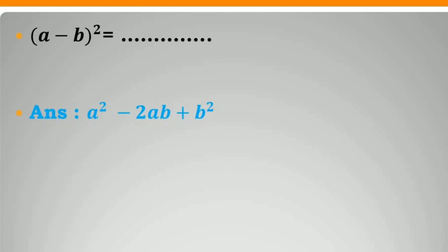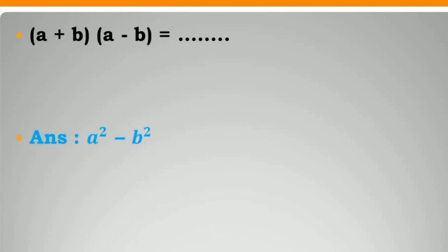(A minus B) bracket square is equal to A square minus 2AB plus B square. Bracket A plus B bracket close into bracket A minus B bracket close is equal to A square minus B square.